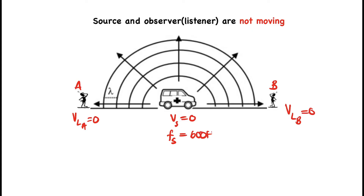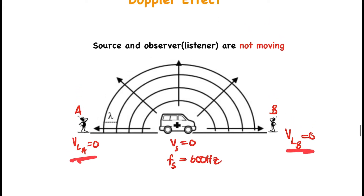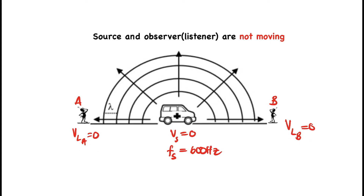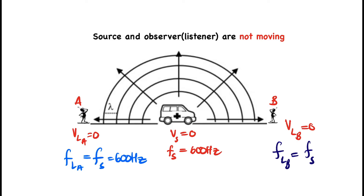Let's say the frequency of the source is 600 Hz. Now the source and the observers are both stationary — the velocity of listener A, listener B, and the source are all equal to zero, so there's no relative motion between them. The frequency observed by listener A is equivalent to the frequency of the source, which is 600 Hz. Similarly, the frequency observed by listener B is also 600 Hz.